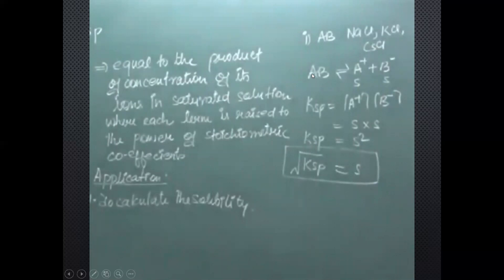For an AB type salt dissolved in water, it breaks down into A⁺ and B⁻. If the solubility of A⁺ is s, then the solubility of B⁻ will also be s, because their ratio is the same. Therefore Ksp equals the product of their concentrations: Ksp = s × s = s². So s equals the square root of Ksp for an AB type compound.